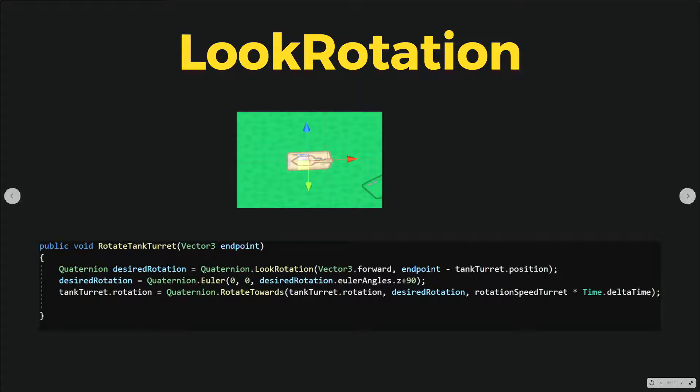Mind that x-axis is the axis that the turret is pointing towards. We can see that we pass to LookRotation z-axis as the first parameter and direction from tank turret to the endpoint which is our mouse click position as the second parameter.